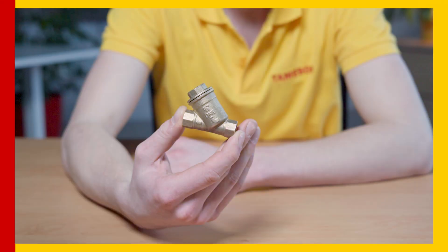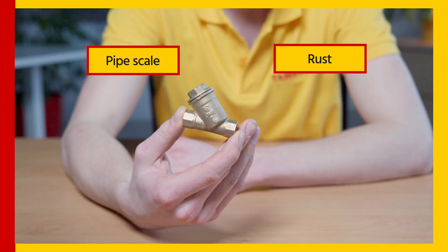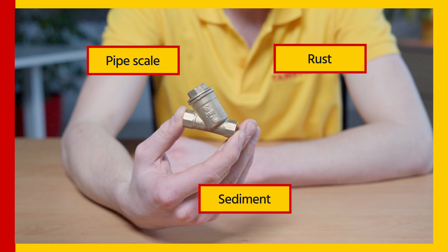A simple Y strainer can keep these components, which are some of the more valuable and expensive parts of a pipeline, protected from the presence of pipe scale, rust, sediment, or any other kind of extraneous debris.